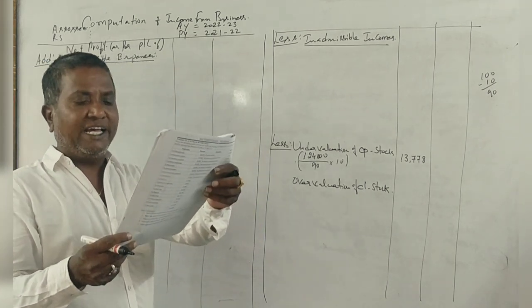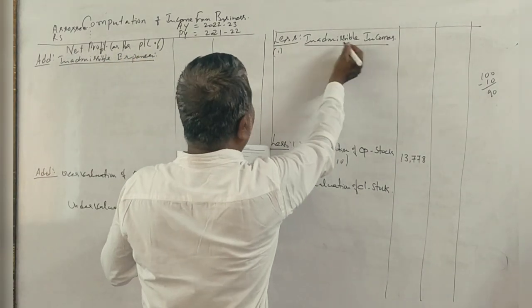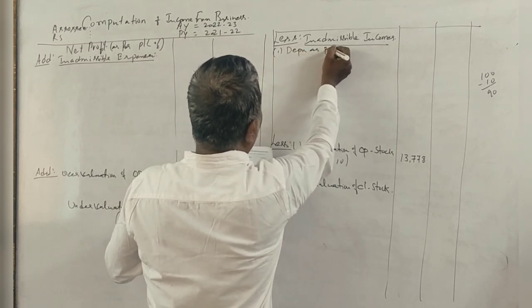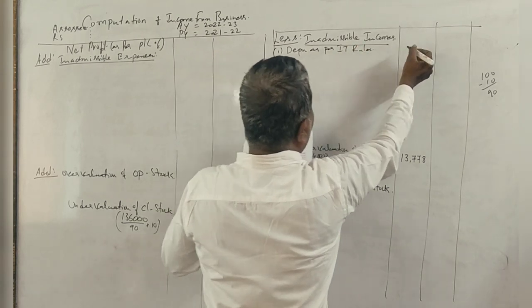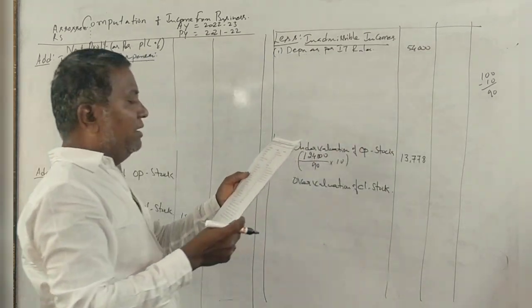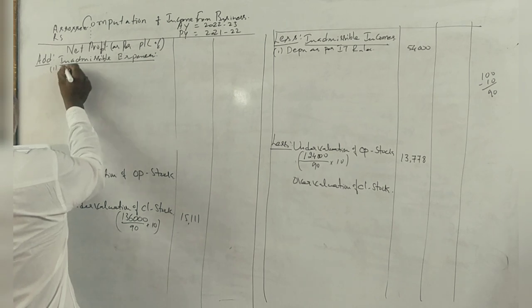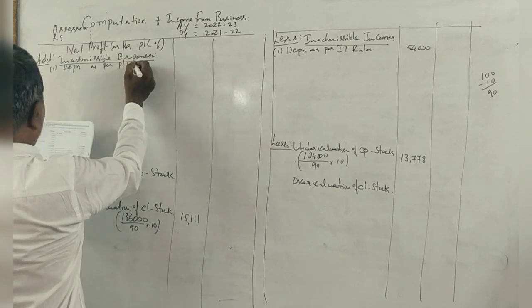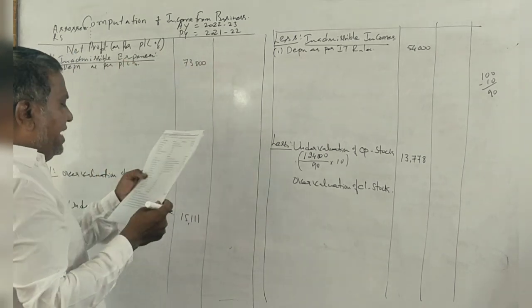Depreciation allowable as per IT rules is 54,000. Inadmissible income: depreciation as per IT rules is 54,000. Depreciation as per profit and loss account is 73,000.